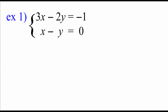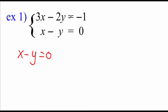Here's our first example: the system 3x minus 2y equals negative 1, and x minus y equals 0. We want that stair-step look with leading coefficients of 1. Our top equation does not have a leading coefficient of 1, but our second equation does. Since we can rearrange the order, I'm going to take the bottom equation, x minus y equals 0, and put that on top of our new system. Now we need to get rid of the 3x at the beginning of the other equation.